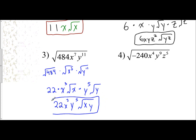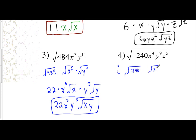So the shortcut is: take your exponent for the variable, divide by 2 — because that tells you how many pairs — then put the remainder as your exponent inside with the variable. This next one is unique. I see a negative, so I can take that out and make it an i — good old imaginary numbers. Then we have the square root of 240, the square root of x to the 4th, square root of y to the 9th, and square root of z to the 5th.